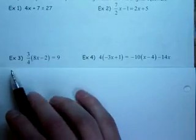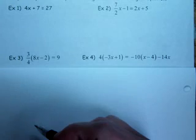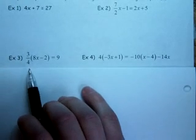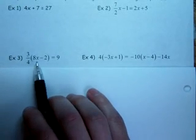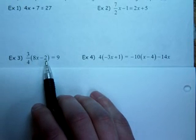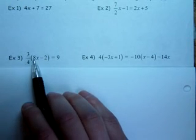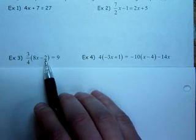Okay guys, on example 3, you've got two choices. You can distribute this fraction times the 8x and the negative 2, and the 4 will reduce with this 8, but the 4 won't completely reduce with this 2.